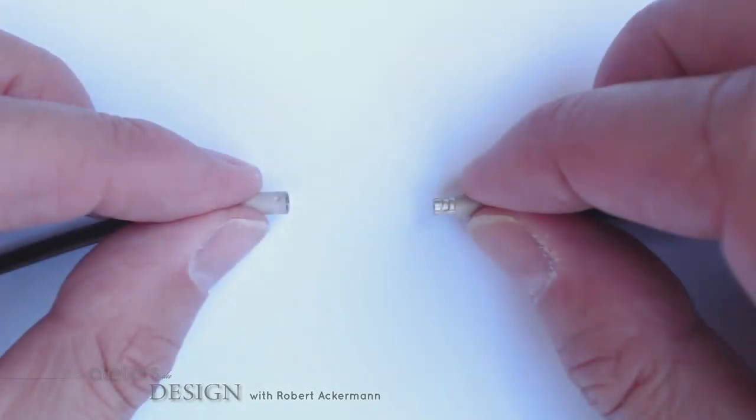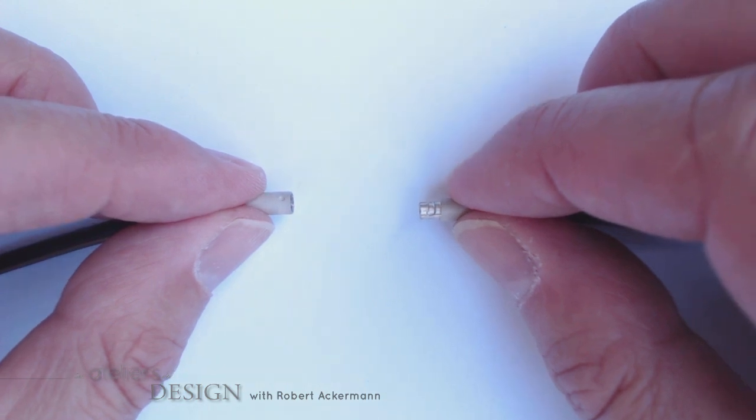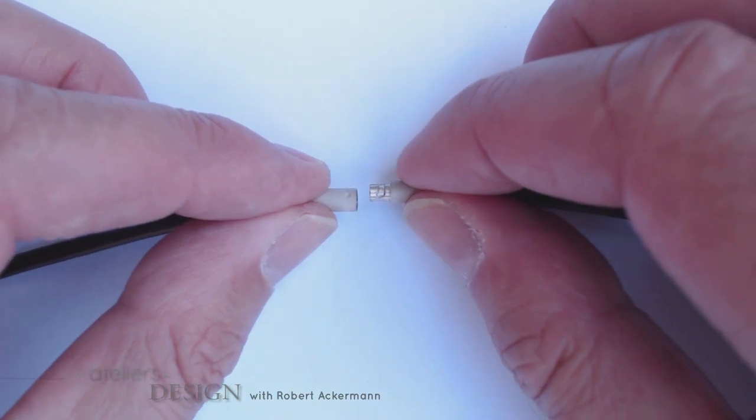So all you do is introduce the male into the female and feel for that groove with a light pressure. Once you feel you've lined up the dimple with the groove, push in all the way.